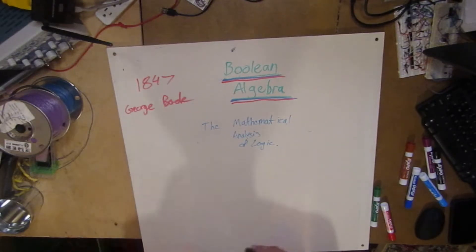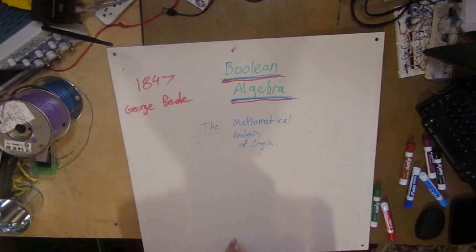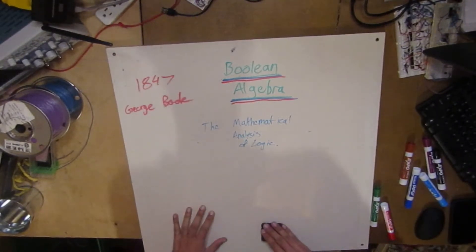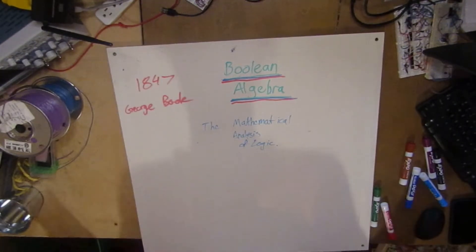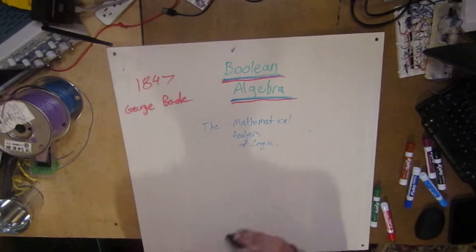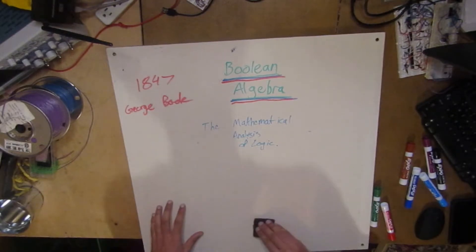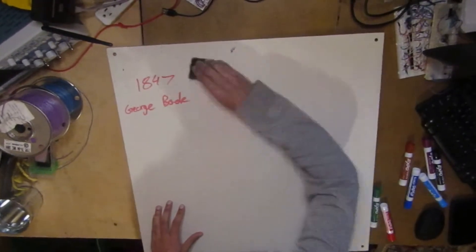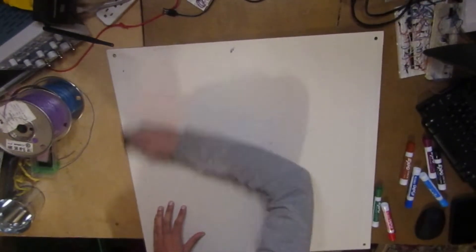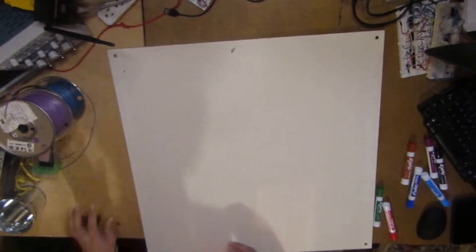So in 1847 there's a guy, George Boole, and he has this book, The Mathematical Analysis of Logic. We have some theories and ideas that explain how to use logic gates and convert these into a mathematical way. So we're going to have to introduce some sort of symbolism to represent operations.